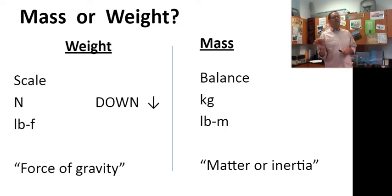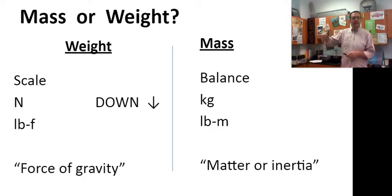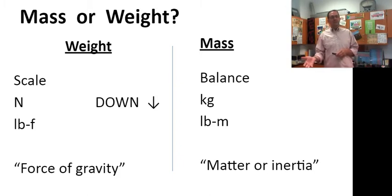Mass is the amount of matter or inertia in an object that does not have a direction. But the force of gravity, that is down. So that does have a direction. Very different things. Keep them separate.